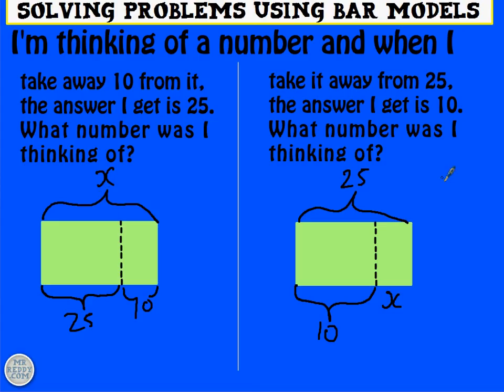Alright, well, again, what I want the bar model to show you is that x take away 10 is 25. So if I take away 10, I get left with 25. What you can also see from the bar model is that the whole thing, which is x, is 25 and 10 together. So what's happening algebraically? Well, we've got x take away 10 is 25, but also x is 25 add 10. In other words, x is 35.